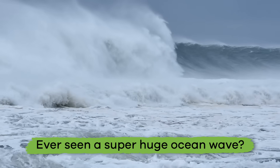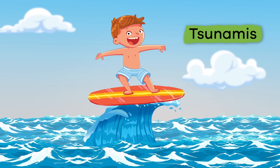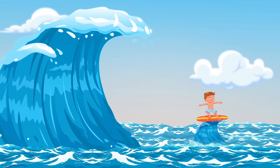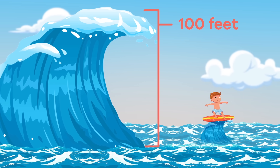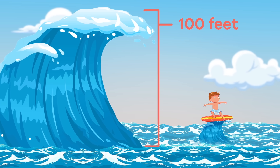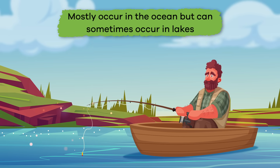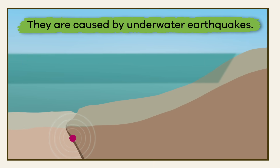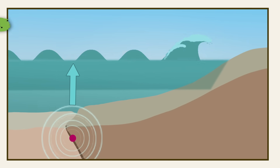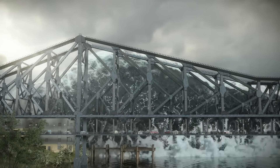Ever seen a super huge ocean wave? Tsunamis make those waves look tiny. These giant water waves surge onto land and reach heights of up to 100 feet. Tsunamis mostly occur in the ocean, but can sometimes occur in lakes. This is because they are caused by underwater earthquakes — the vibrations cause a disruption in the water, which causes the huge wave.